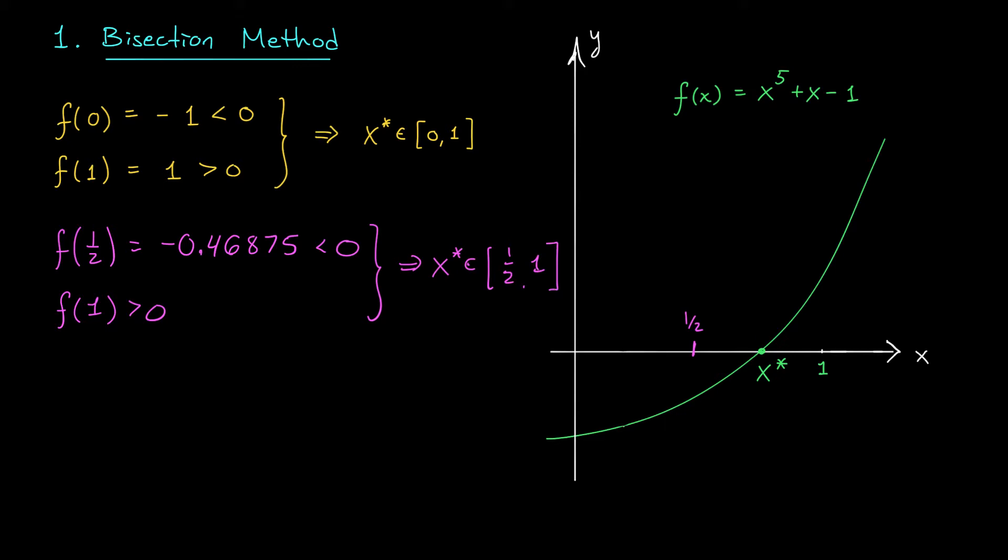So keep going. Cut it in half again. We'll cut it at the point x equals 3 quarters. If I compute f of 3 quarters using a calculator, you should see that this is a negative number. But wait a minute. f of 1 is positive. These two facts together tell me that my root, x star, is somewhere between 3 quarters and 1. And you can continue this process if you want. Keep bisecting your interval to hone in on the location of x star.